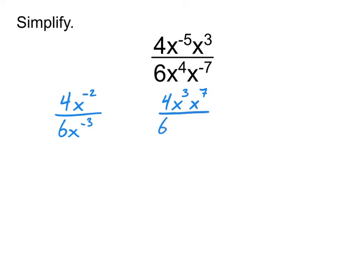And then on the bottom, I'd still have the 6, because it does not have a negative exponent on it. I'd still have the x to the 4th, because that is also a positive exponent. And then I would have x to the 5th, because the negative exponent on the 5th flipped it into the bottom. Now that we are here, we simplify from there.